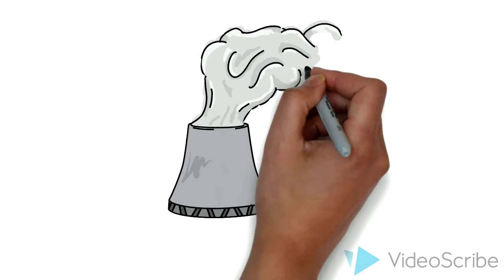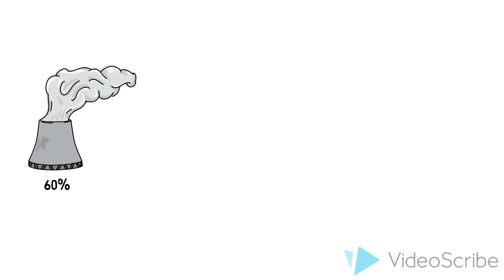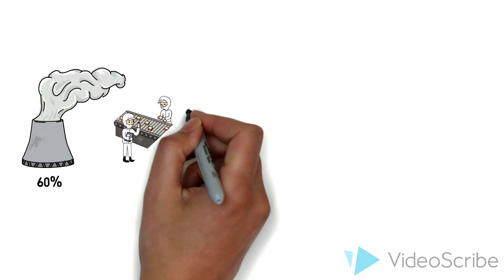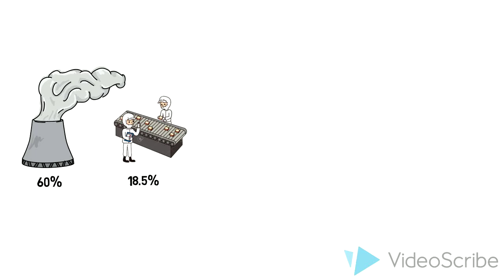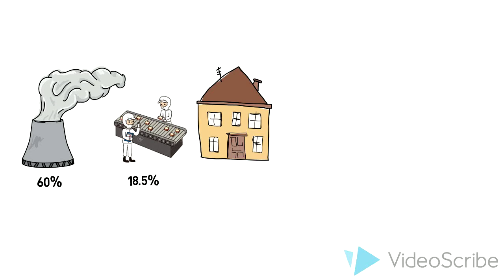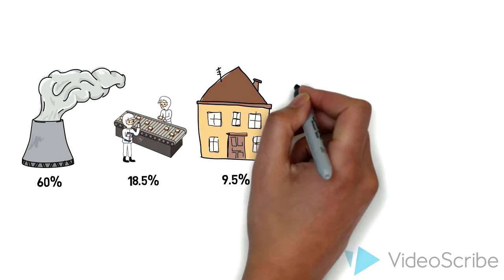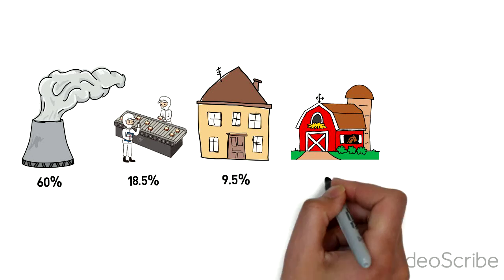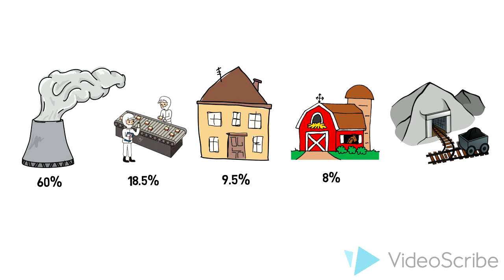With this limited resource, we seem to not be concerned with how we use it. In Canada, 60% of our water use comes from thermal power generation, while 18% can be attributed to the manufacturing industry. Municipally and residentially, we use 9.5%. And agriculturally, we use 8% of that water, while mining only takes up about 4%.